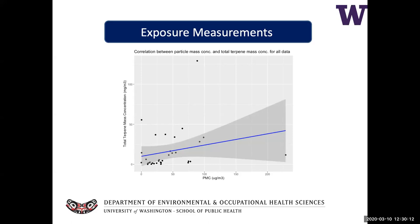We observed a weak correlation between particle mass concentration and total terpene mass concentration. However, when the data was broken down into individual task zones, the associations between particle mass and terpene mass were weak and not statistically significant. This indicates that there is not an especially strong relationship between terpenes and total particle mass concentration.